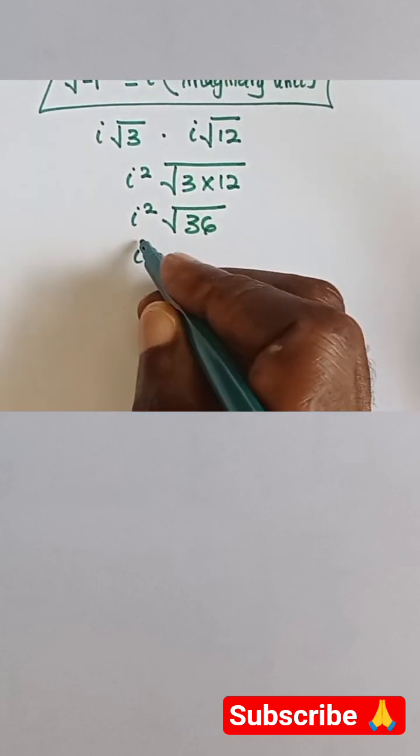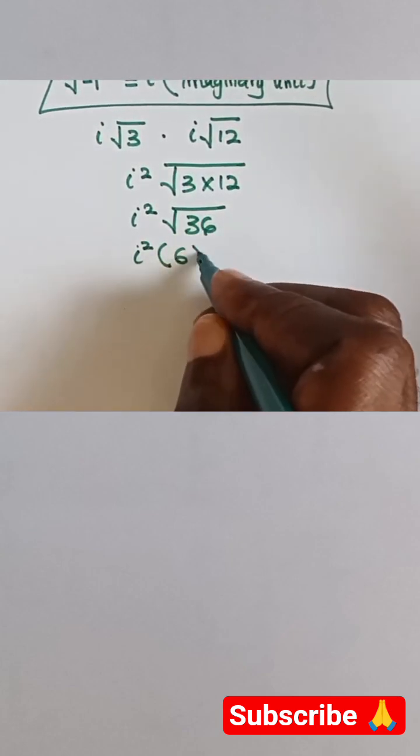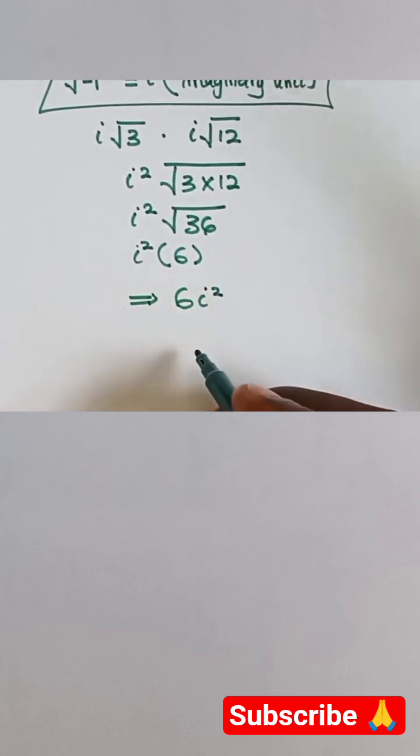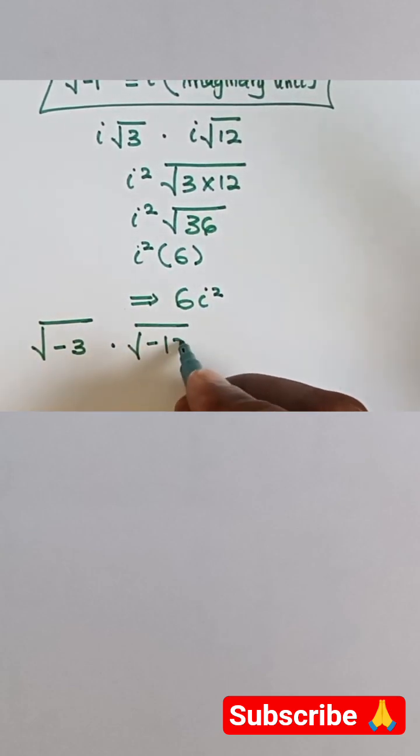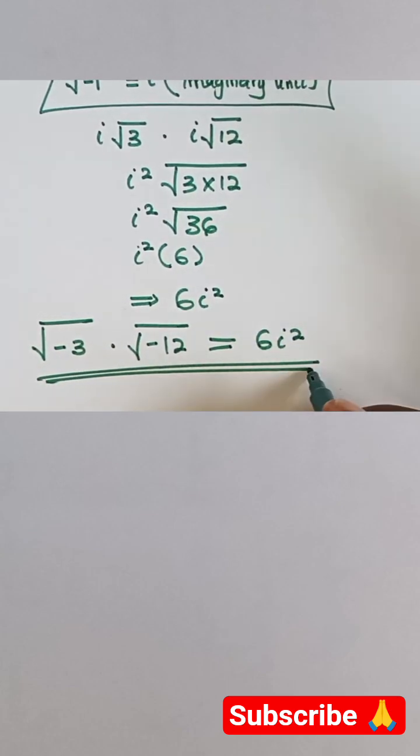We can find √36 to be 6. So we have i² × 6. We can write this as 6i². So if we simplify √-3 multiplied by √-12, the answer is 6i². This is the correct answer.